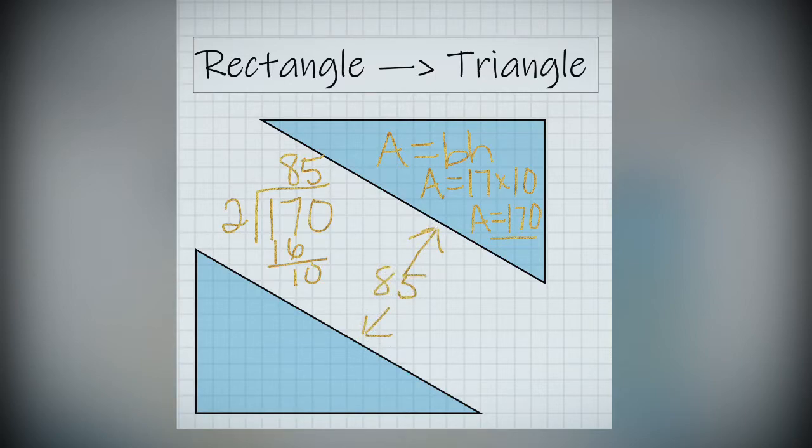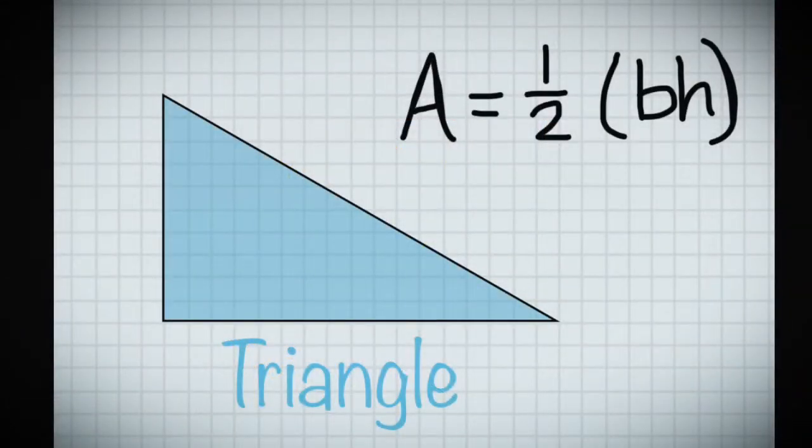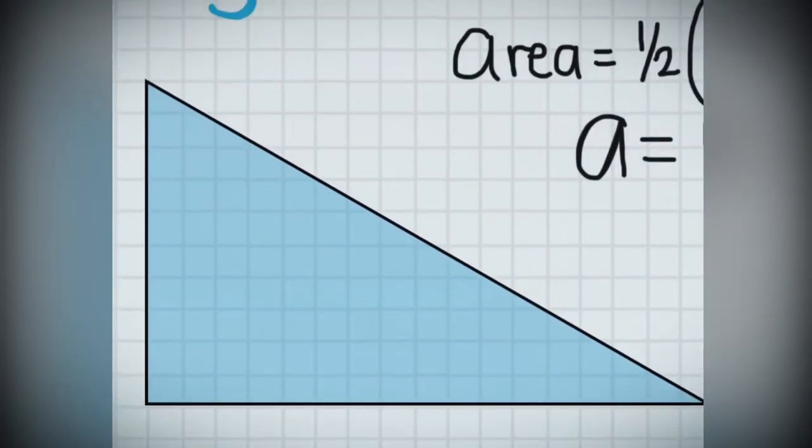Together, the triangles would have an area of 170, but apart, they each have 85 square units. Therefore, the area formula for a triangle is half of base times height.